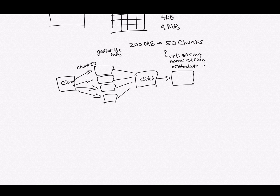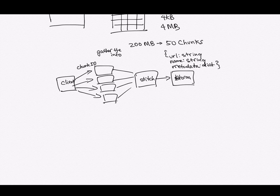We need the URL, the name, and the metadata, which is going to be a dictionary. We can use SQL for this, which would make it easier to associate metadata if we want to create a data hierarchy. It will also generally be faster to query, and we won't be doing map reduce operations, so there's no reason to use a NoSQL database.